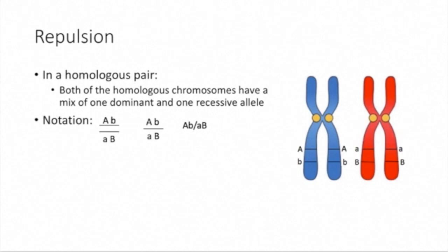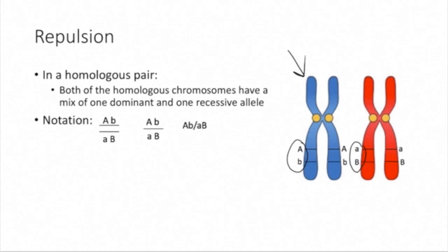So now we're going to talk about repulsion. A heterozygote with linked genes in repulsion would have one dominant and one recessive allele on one chromosome, and the corresponding dominant and recessive allele on the other homologous chromosome. So linked genes in repulsion would look something like this when viewing a homologous chromosome pair. You would have big A and little b on one chromosome, and little a and big B on the other homologous chromosome. These over here are different types of notations you can use to describe linked genes in repulsion.